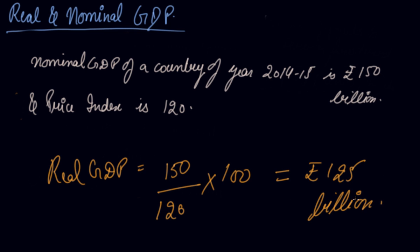So rupees 125 billion is your real GDP. Now this price index is known as your GDP deflator.